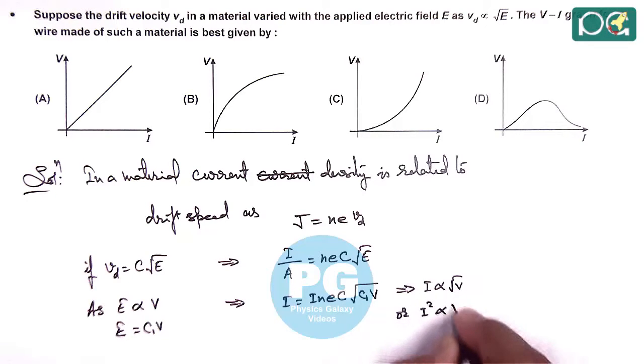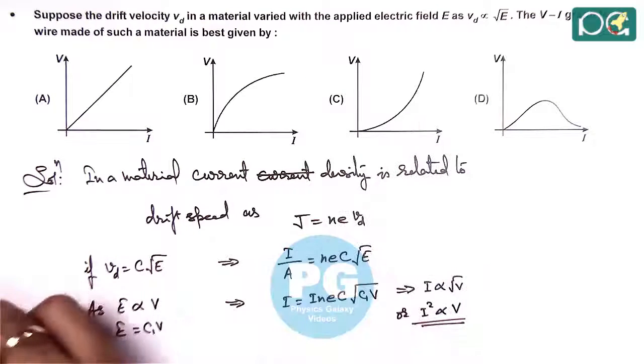Or, I square is proportional to V, which matches with option C, I square proportional to V.